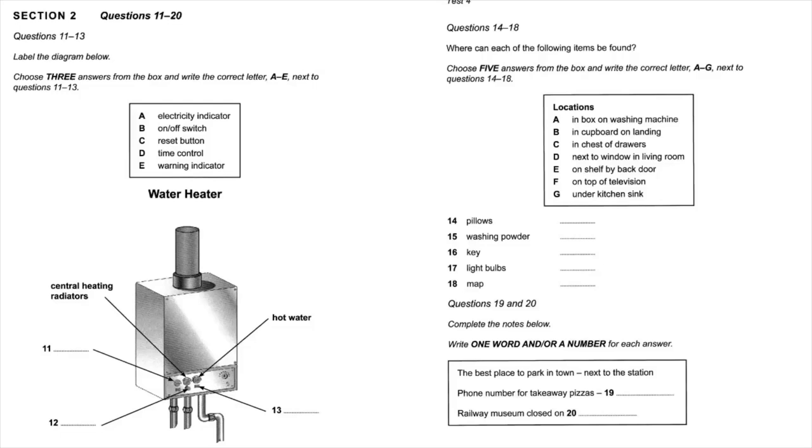Below the heating controls, in the middle, is a small round plastic button. If there isn't enough water in the pipes, sometimes the heater goes out. If this happens, you'll need to press this button to reset the heater. Hold it in for about five seconds and the heater should come on again.